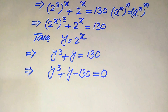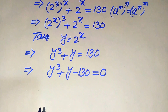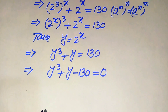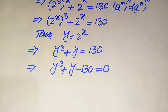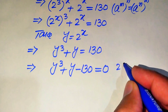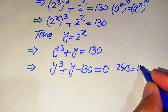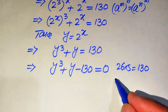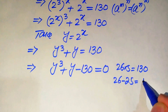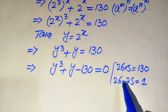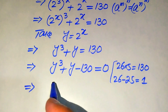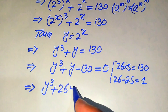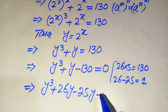This equation is now cubic, and we factor it by breaking the middle term. We need two numbers whose product equals 130 and whose sum equals 1. We find that 26 times 5 equals 130, and 26 minus 25 equals 1, so these are our two numbers.